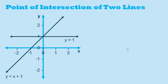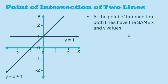This is the last topic, so we're almost done. Let's look at the point of intersection of two lines. In other words, where the lines cross each other. At the point of intersection, both lines have the same x and y values. In this case, x is 0 and y is 1 for both lines by looking at the graph.